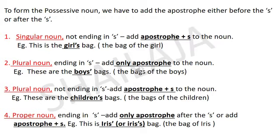Next: the plural noun not ending in S — add apostrophe plus S to the noun. For example: 'These are the children's bags' — the bags of the children — so we add apostrophe plus S to the noun 'children.' Next: proper noun ending in S — add only an apostrophe after the S, or add apostrophe plus S. For example: 'This is Iris's bag' or 'Iris' bag' — I-R-I-S apostrophe S — the bag of Iris.